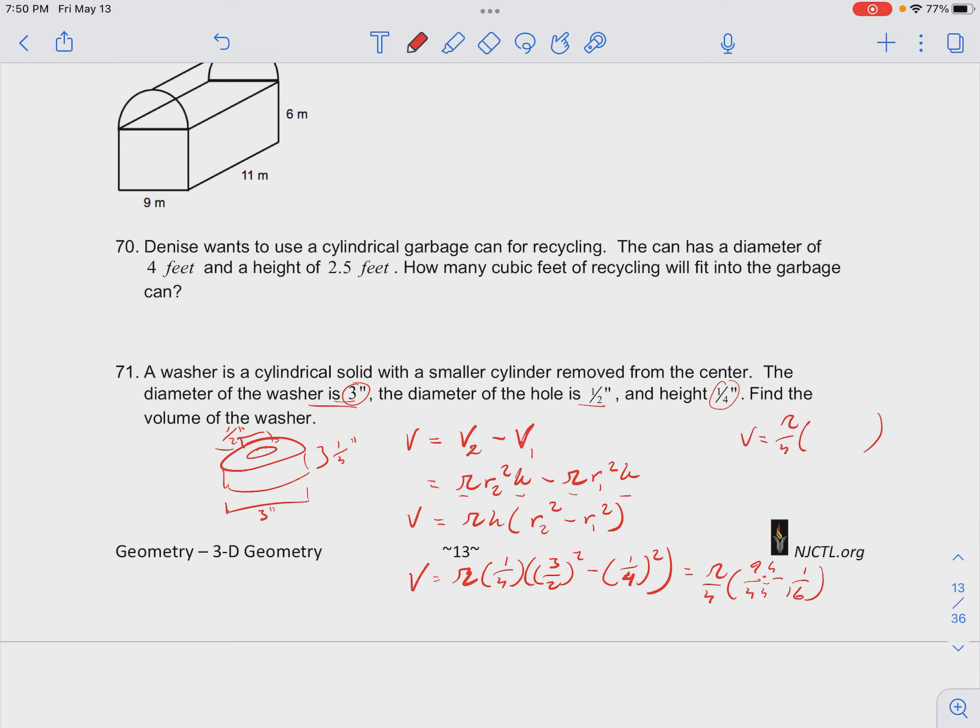And we have 36 minus 1, which will be 35 over 16. So we have that the volume is equal to 35π/64.